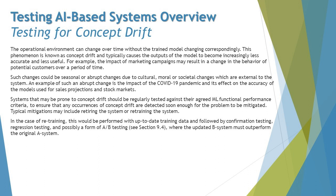Typical mitigation may include retiring the system or retraining the system — those are the only two things you can really do. Over a period of time you can retrain the system to build better accuracy and precision for the outcome. But after a particular duration, maybe a few years, if the base fundamentals have changed and the users of such products have changed, rather than continuing to retrain, you should look to retire the tool and build something from scratch aligned with the latest trends.